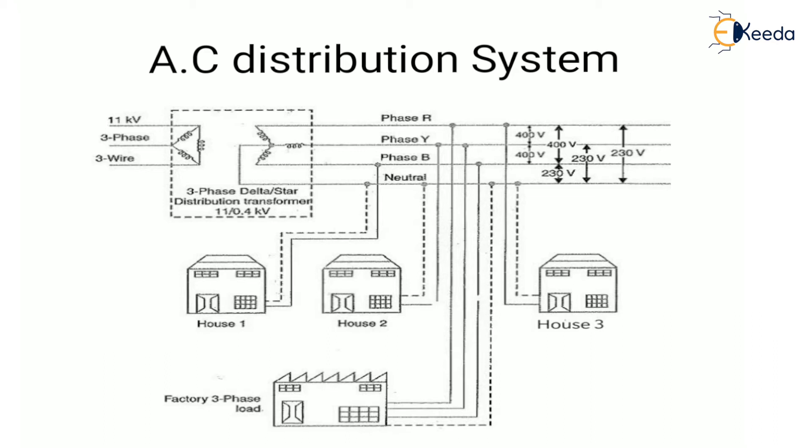At the substation, the voltage is reduced to 11 kV in 3-phase 3-wire, and this voltage is stepped down with the help of a step-down transformer. Big consumers are generally supplied power at 11 kV for further handling at their own plants.